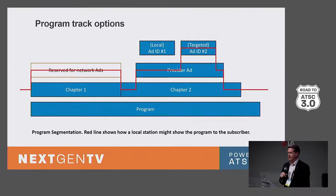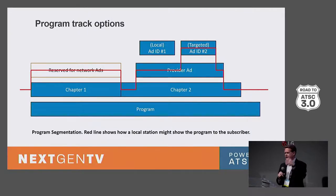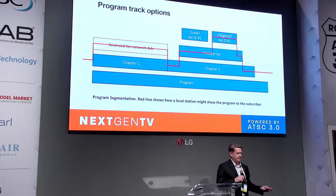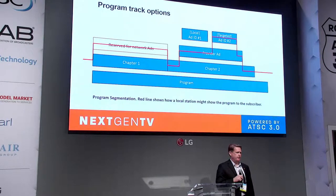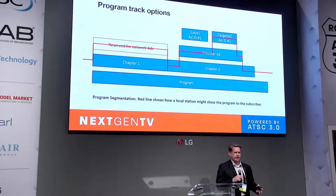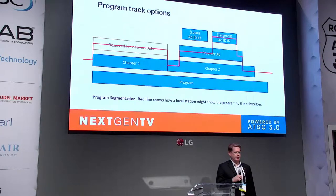Looking at a program track with time on the bottom going linearly to the right, the programs available to a broadcaster are labeled in the stack. A program at the bottom is linear but can have a series of chapters. Chapter one could be a network feed where the local affiliate is not touching advertisements — those are restricted. In chapter two there could be a local program ad, and for that local ad there could be two options: ad ID number one or ad ID number two. In this example, targeted ad number two is selected.